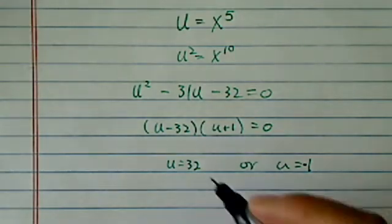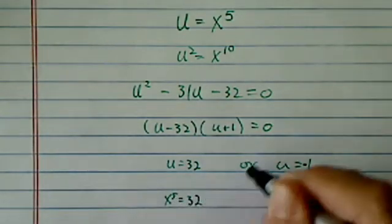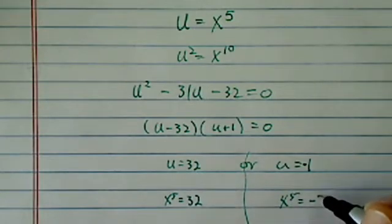And since u is equal to x to the fifth, x to the fifth equal to 32 or x to the fifth is equal to minus 1.